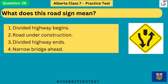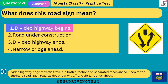What does this road sign mean? 1. Divided highway begins. 2. Road under construction. 3. Divided highway ends. 4. Narrow bridge ahead. The answer is 1: divided highway begins. Traffic travels in both directions on separated roads ahead. Keep to the right-hand road. Each road carries one-way traffic. Right lane ends ahead.